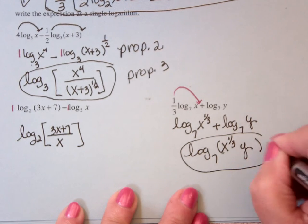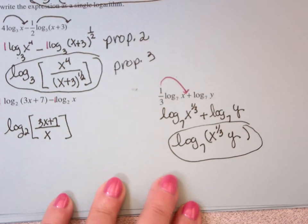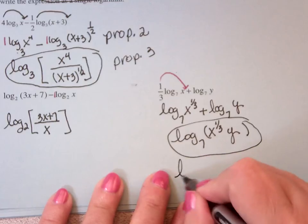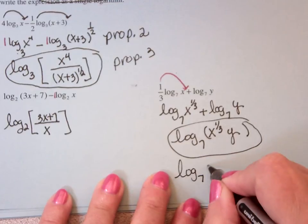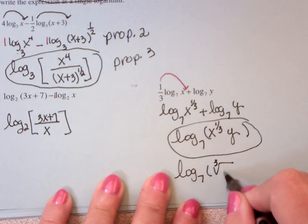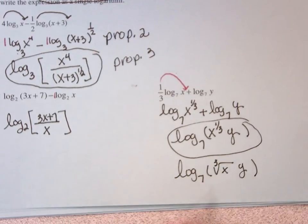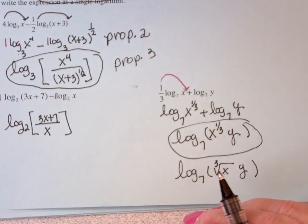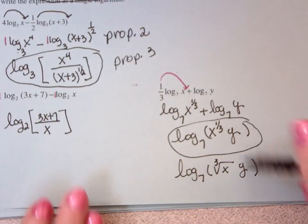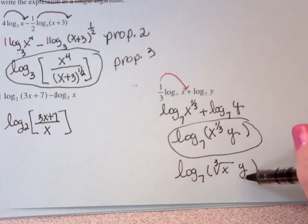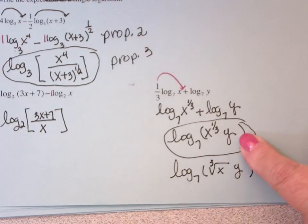You could turn the x to the 1/3 into cube root if you wanted to. I have some students, especially in the 11 o'clock hour, that would love to do that. But to be honest with you, I personally would quit while I'm ahead because there's a better chance of making an error. If this is fine, leave it and move on.